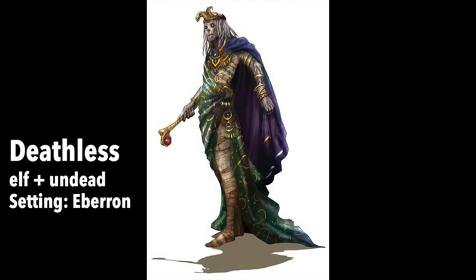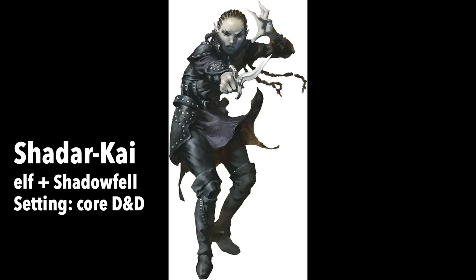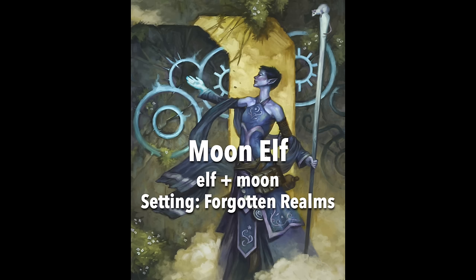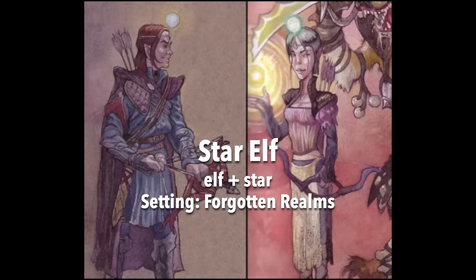Deathless elf is elf plus undead — the elves of the undying court who stave off death not through necromancy or negative energy, but through positive energy. Shadar-kai is elf plus shadowfell — cold-hearted shadowfell-dwelling elves that serve the Raven Queen, essentially the dark counterpart to the eladrin. Moon elf, also called silver elves, is elf plus moon — adventurous elves that intermingle with many other races. Sun elf, also called gold elves, is elf plus sun — glorious, ambitious, and arrogant.